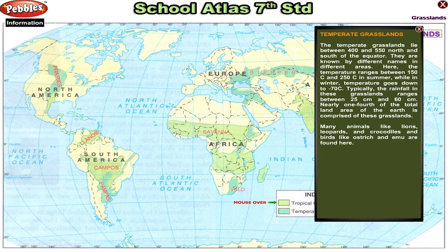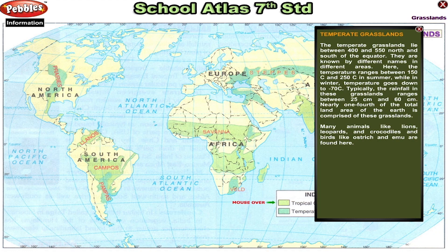Temperate grasslands lie between 40 degrees and 55 degrees north and south of the equator. They are known by different names in different areas. The temperature ranges between 15 degree Celsius and 25 degree Celsius in summer, while in winter temperature goes down to minus 7 degree Celsius. Typically, the rainfall in these grasslands ranges from 25 centimeters to 60 centimeters. Nearly one-fourth of the total land area of the earth is comprised of these grasslands.